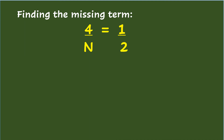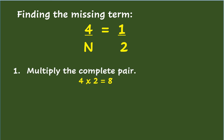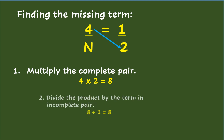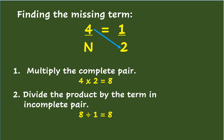To find the missing term in proportion when ratios are in fraction form, like 4 over n equals 1/2, apply cross-multiplication. First, multiply the complete pair of terms: 4 and 2, giving 4 times 2 equals 8. Second, divide the product by the term in the incomplete pair: 8 divided by 1 equals 8. So the missing term is 8.